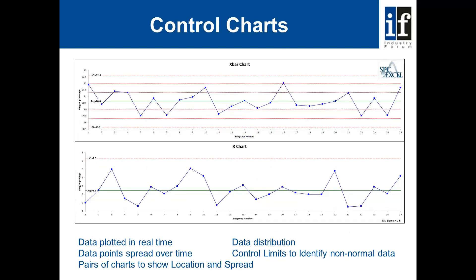When considering variation, it's useful to record the process performance in the form of a control chart. Here we can see an example of an X bar R chart. In this instance, five parts were taken every hour. The top chart shows the average measurement of those five parts taken each hour. The bottom chart shows the difference between the largest and smallest value in the sample of five parts. The data is plotted in real time as a pair of charts to show location and spread, and we can see control limits to identify non-normal data.